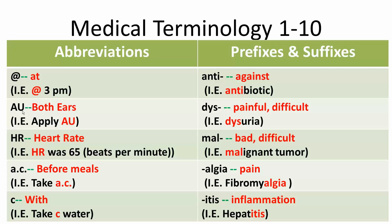Capital A, capital U (AU) means both ears — for example, 'apply to both ears.' Capital H, capital R (HR) means heart rate — for example, 'heart rate was 65 beats per minute.'